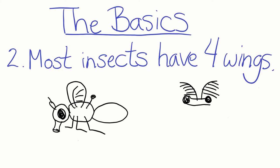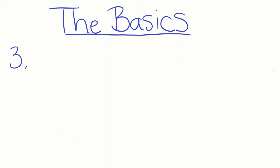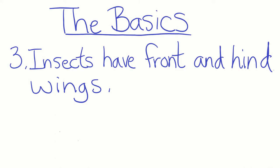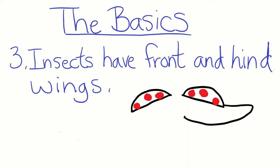Drop a comment if you are interested in that video. Three, insects have pairs of front wings and hind wings. Both front wings will be the same and both of the hind wings will be the same, but sometimes the front and hind wings are different from each other.